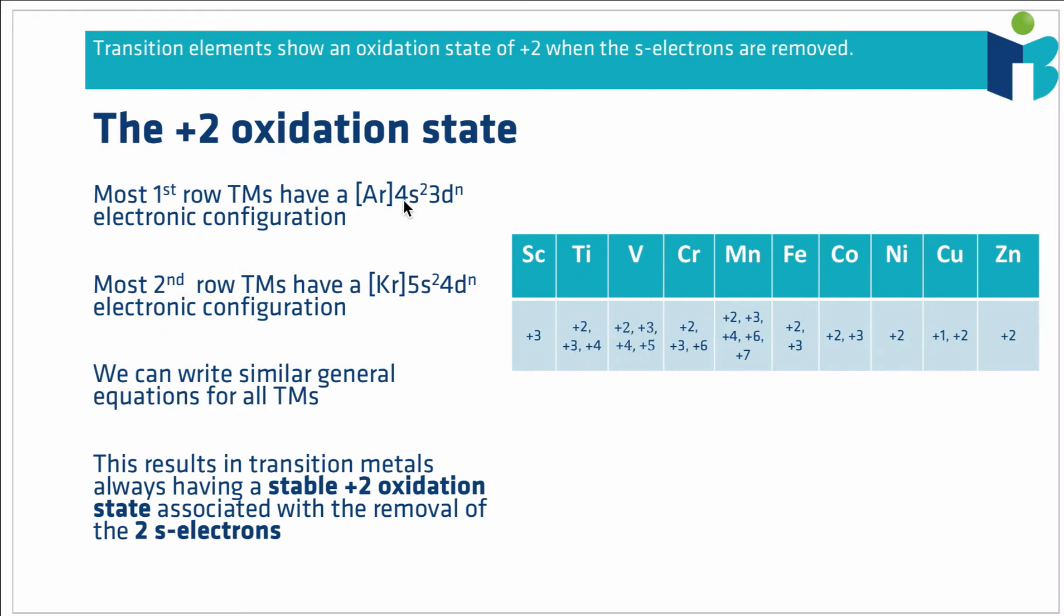Now the reason for this is that if we look at our first row transition metals, most of those have an electronic configuration that's going to end with 4s2 3dn, some number of electrons in those d orbitals. Our second row, we're looking at an electronic configuration that ends with 5s2 4dn, some number of electrons in those 4d orbitals. And we could write something similar for the next row, we'd just be looking at the 6s and the 5d, but usually we're going to have a full s orbital and then a partially filled d orbital straight after that.